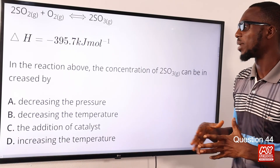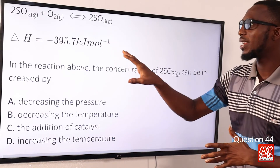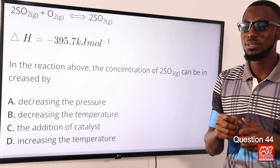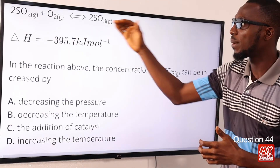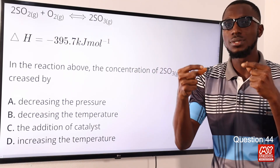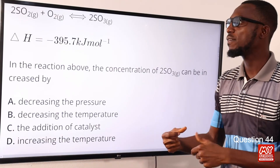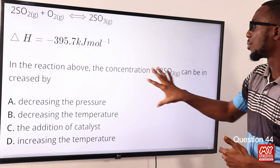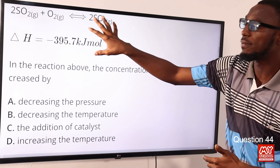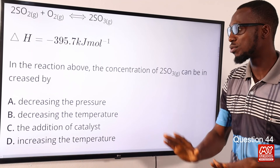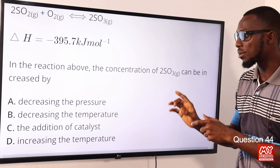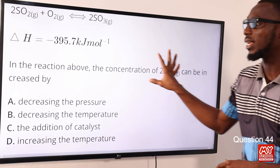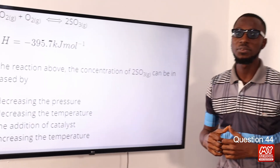Question 44: The concentration of two moles of SO3 can be increased by doing what? SO3 is on the product side and the enthalpy value is negative, so this is an exothermic reaction. For an exothermic reaction, to favor the forward reaction and increase product formation, you must decrease or lower the temperature. Increasing temperature favors the backward reaction. To increase the concentration of SO3, we decrease the temperature. Option B is the correct option.